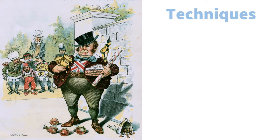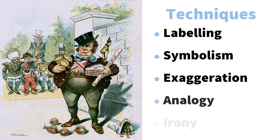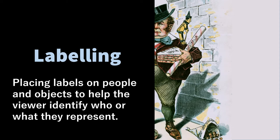Cartoonists commonly use five techniques to present their point of view. These are labelling, symbolism, exaggeration, analogy and irony. Keep in mind that not all of these techniques will be used in every cartoon that you view.